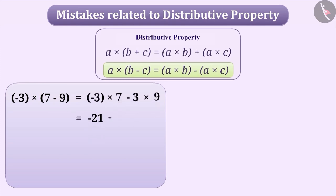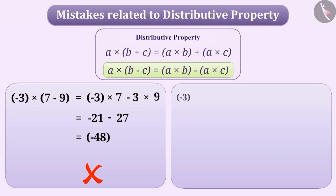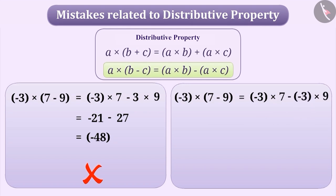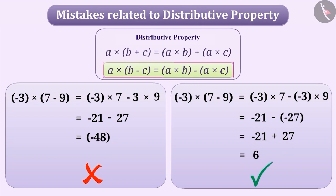That gives minus 48, which is incorrect. The correct solution is: minus 3 multiplied by 7 minus 9 equals minus 3 multiplied by 7 minus minus 3 multiplied by 9, which equals minus 21 minus minus 27, which equals minus 21 plus 27, which equals 6. It is important to notice the sign of the numbers while using the distributive property.